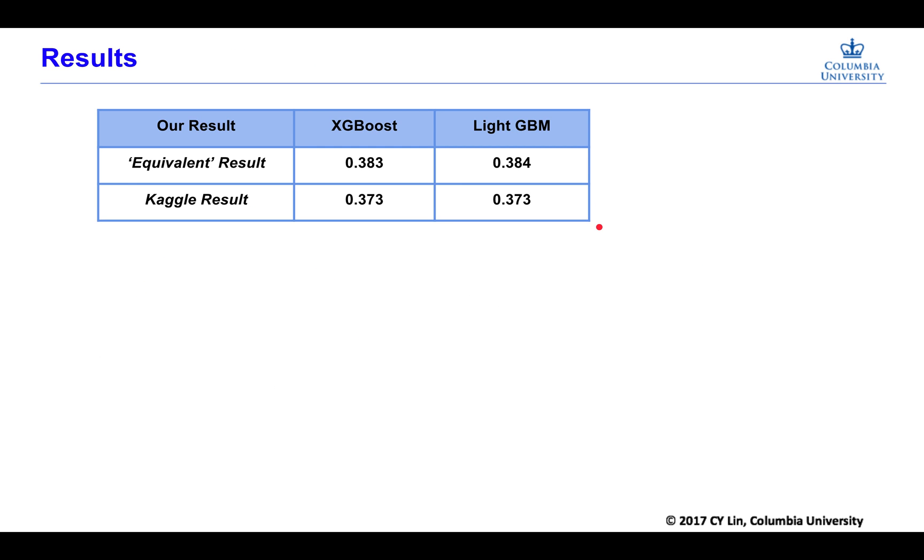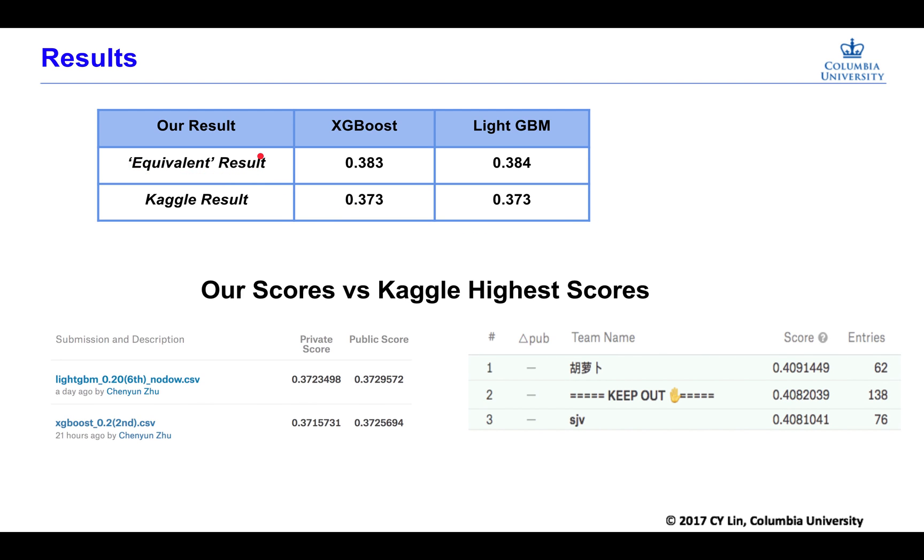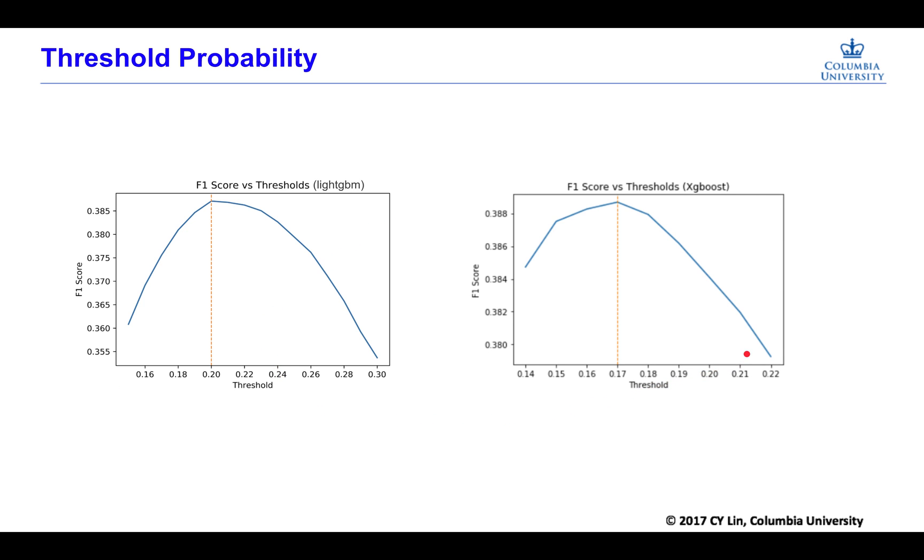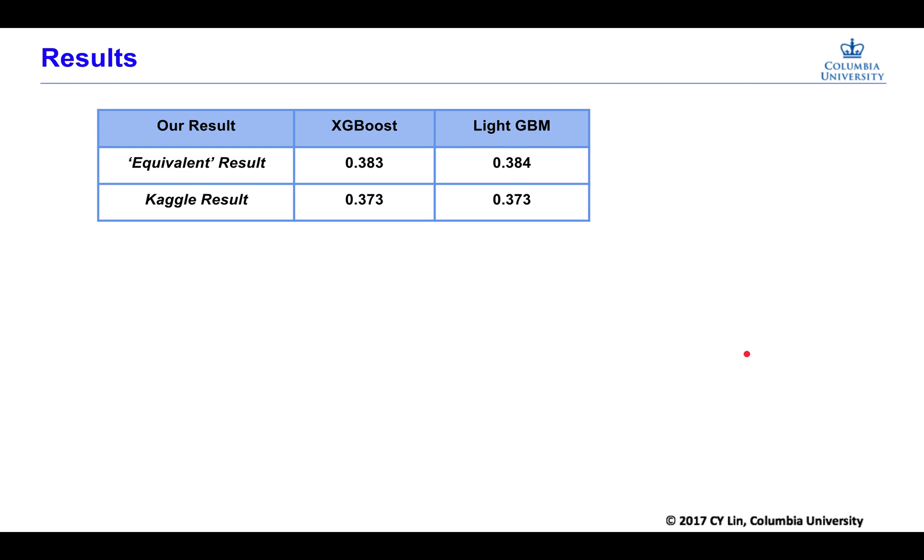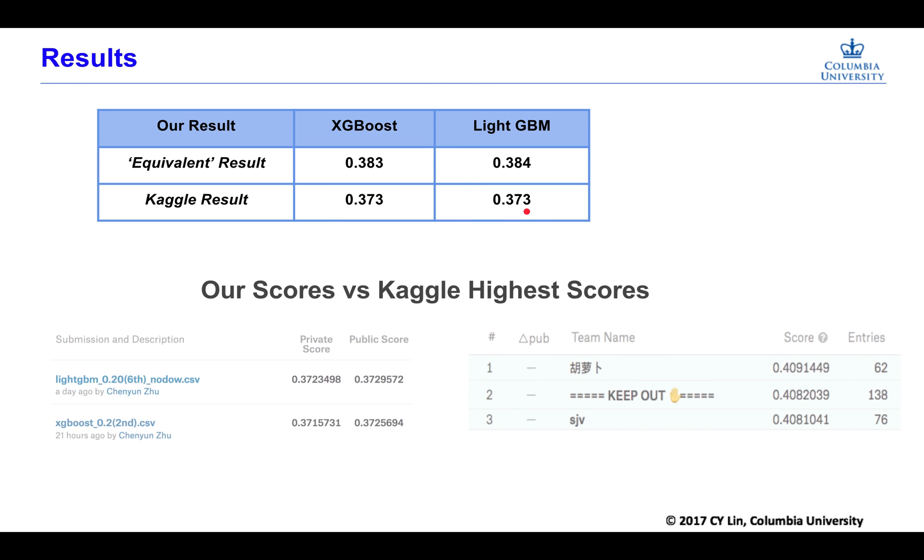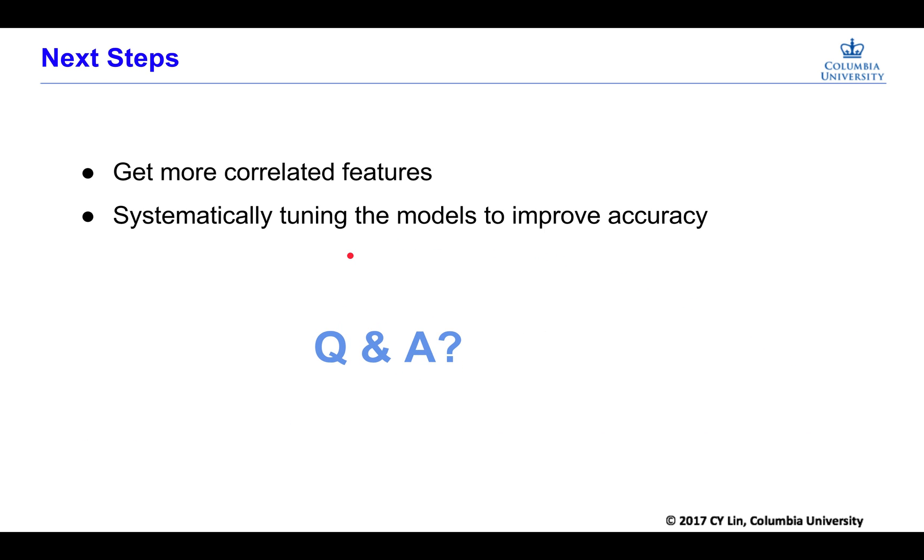So here's the results. We can produce equivalent results through our training dataset. It's about 0.38 for both algorithms. And then we use the threshold we get here to produce another outcome for the whole training set and submit to Kaggle. It is evaluated as 0.37 for both of them. You may think it's a very low accuracy, but the highest Kaggle score is 0.409. So I think it's pretty good though. Our next step would be getting more correlated features and also systematically tuning the models to improve accuracy. Thank you so much.